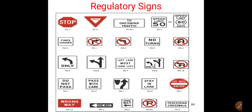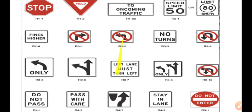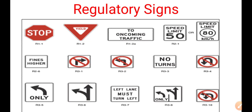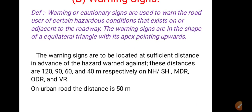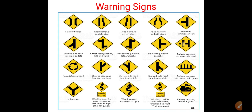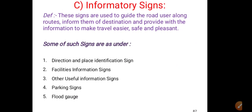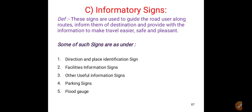In the last class we have seen the traffic control devices article, in which signs are one of the traffic control devices which you have learned. There are three types of signs: regulatory signs or mandatory signs, warning or cautionary signs, and informatory signs. All these signs are very useful for road users.